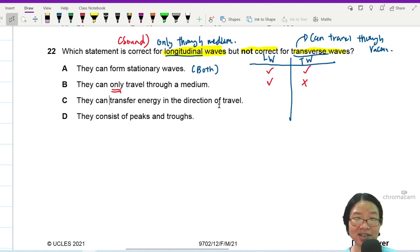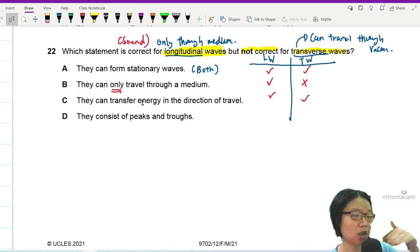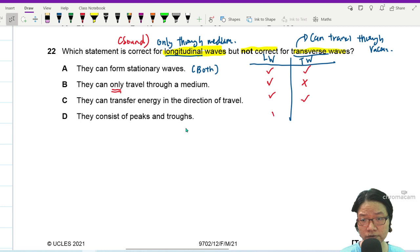They can transfer energy in the direction of travel. The answer is yes. Of course, they will transfer energy in the direction of travel. If let's say now I'm shouting at you from one end of the room, the energy of my sound wave, which is the vibration of air particles, will travel along the room, transferring energy to you. They consist of peak and trough. Of course, both consist of peak and trough. So the answer here is B.